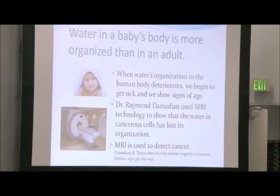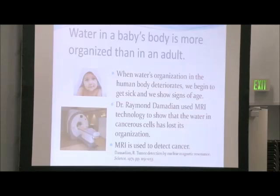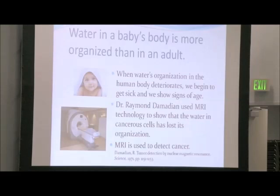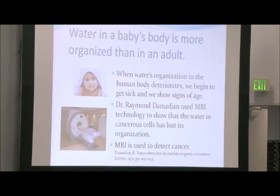In the 1970s, Dr. Raymond Damadian used MRI — magnetic resonance imaging — to look at the organization of the water in the human body. What he discovered ended up being a method of detecting cancer, because he found that cancer cells have less organized water in them than do healthy cells. So today, we use MRI to detect certain forms of cancer, but most people don't realize that MRI is looking at the organization of the water.